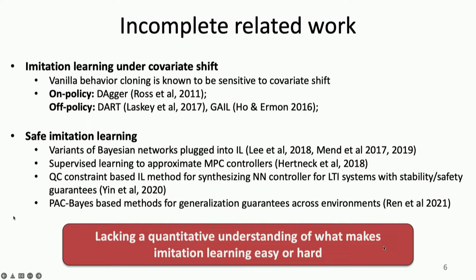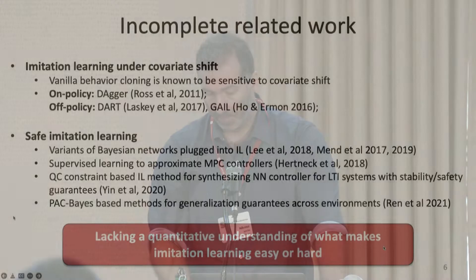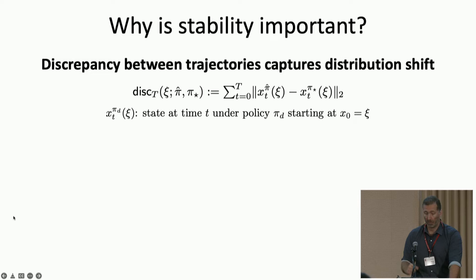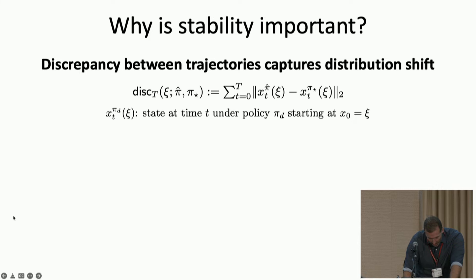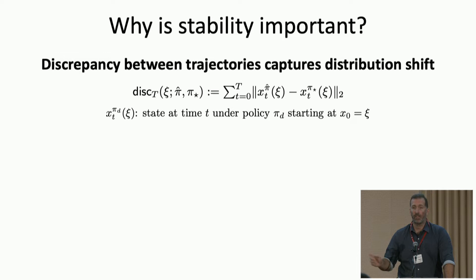Let's dive into a little bit of math. Why is stability important? We can talk about distribution shift in terms of this discrepancy — a running sum of the difference between the state induced by my expert policy and that induced by my learned policy starting from the same initial condition C. The notation x sub t superscript pi-d of C means the state at time t under the data-generating policy pi-d starting from initial condition C. If I apply a naive bound without assuming anything about my underlying policy except that everything is smooth and bounded, I can show the following bound on the discrepancy on a new test initial condition.